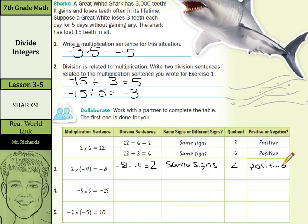For the other one, we have negative 8 divided by 2 is negative 4. Well, do we have same signs or different signs? Here we have different signs. Our quotient was a negative 4, and so our result was negative.